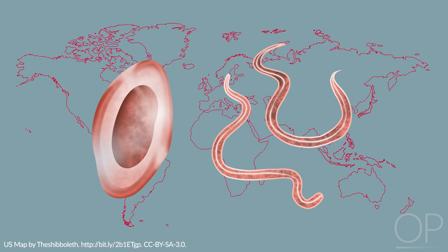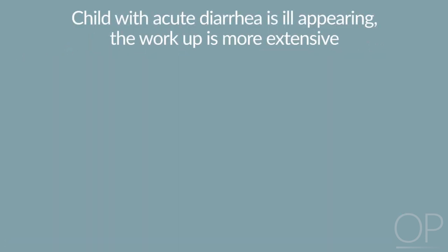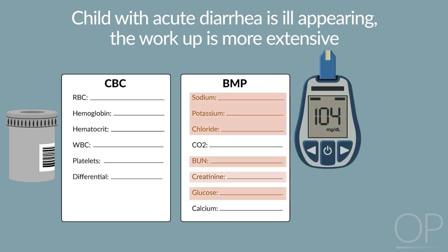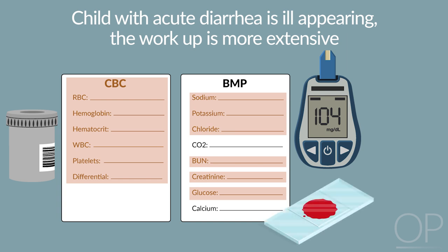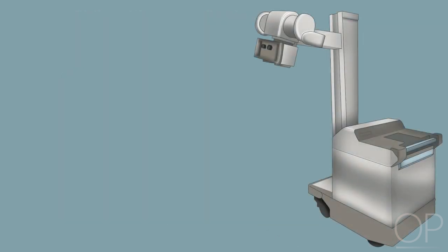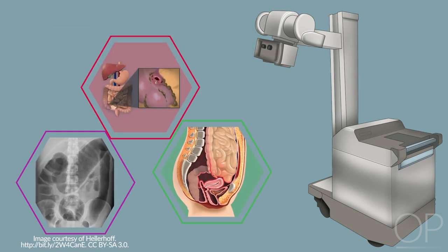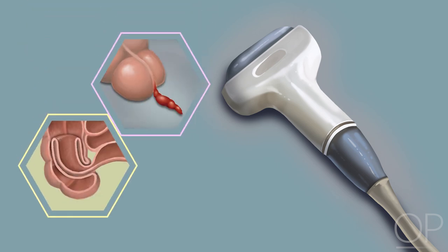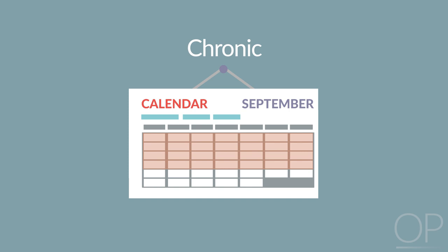If a child with acute diarrhea is ill-appearing, the workup is more extensive. In addition to stool cultures, this may include a basic metabolic panel, electrolytes including rapid glucose, BUN, and creatinine, a complete blood count including differential, a peripheral blood smear to assess for hemolytic uremic syndrome, and a blood culture. Plain abdominal radiographs are only necessary in patients with suspicion of toxic megacolon, peritonitis, or perforation. An ultrasound may be performed to rule out intussusception or appendicitis.